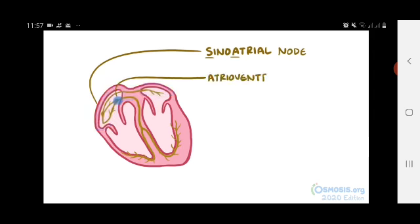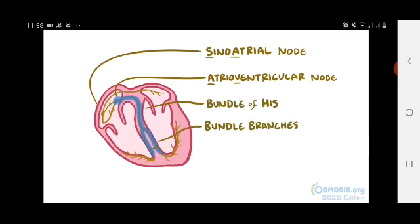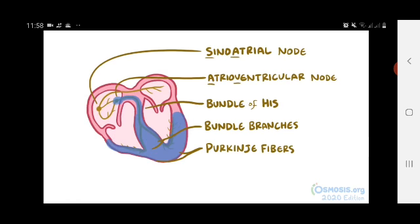Then that signal moves to the atrioventricular, or AV node, where the signal is delayed for a split second and then goes down into the ventricles, or lower chambers, where it moves down into the bundle of His into the left and right bundle branches, and into each ventricle's Purkinje fibers, causing the ventricles to contract as well.